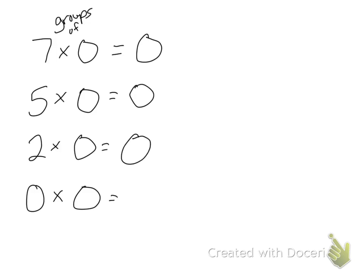And 0 groups of 0 is, of course, 0. So anytime we multiply by 0, the answer is always 0.